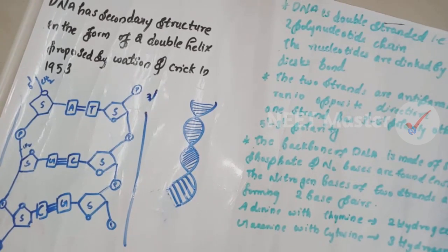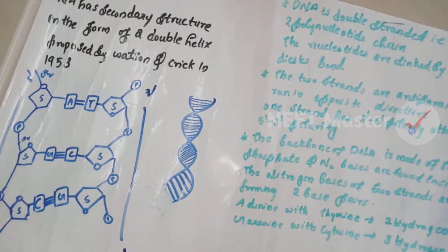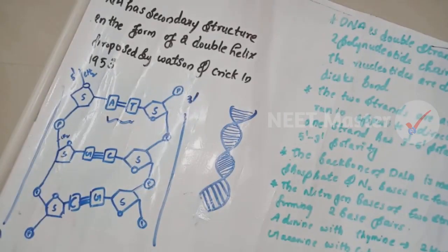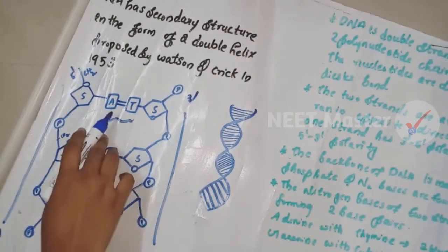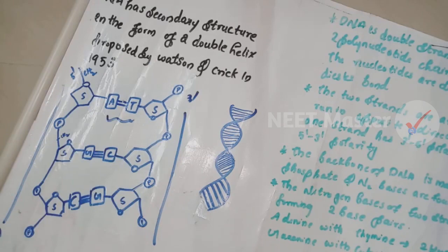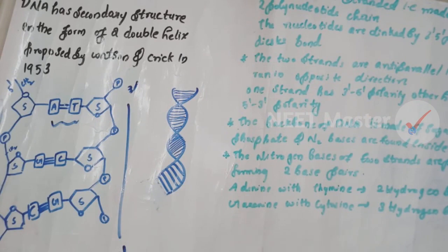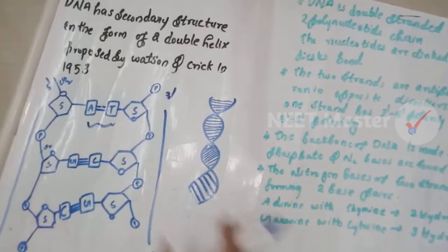The nitrogen bases of the two strands are paired, forming base pairs. Adenine pairs with thymine, and guanine pairs with cytosine. Adenine and thymine are connected by 2 hydrogen bonds, while guanine and cytosine are connected by 3 hydrogen bonds.